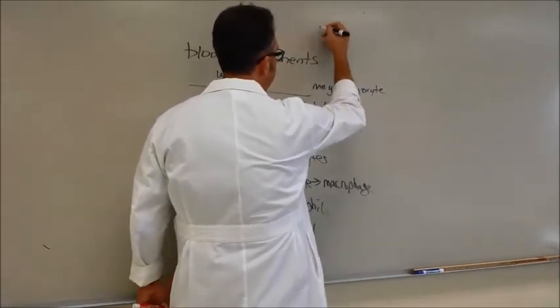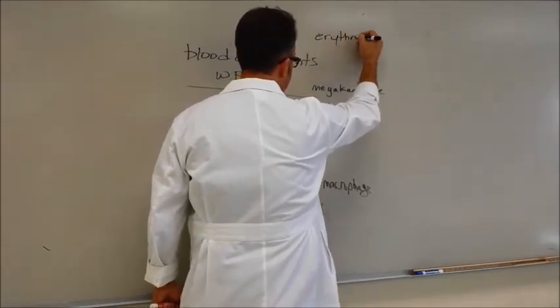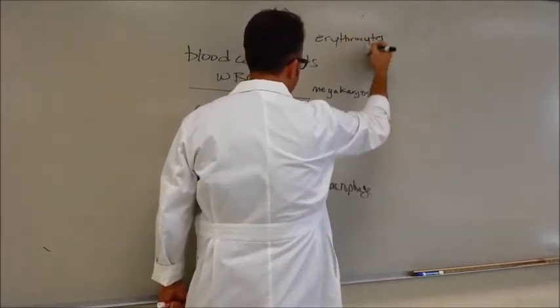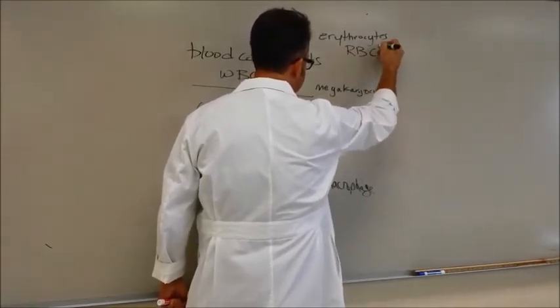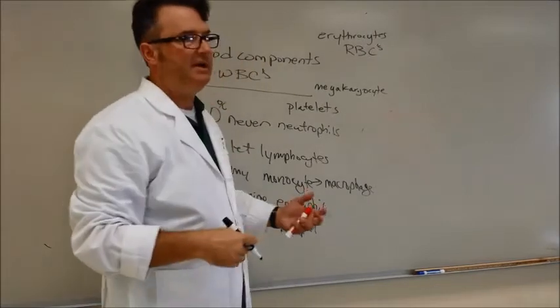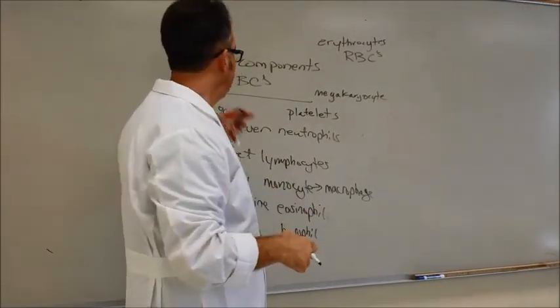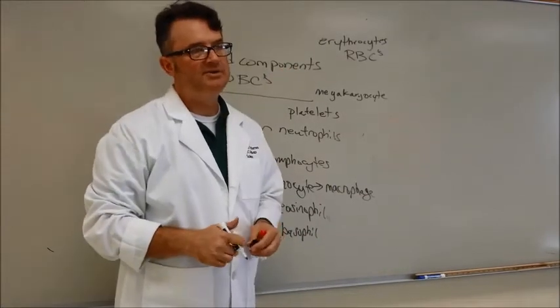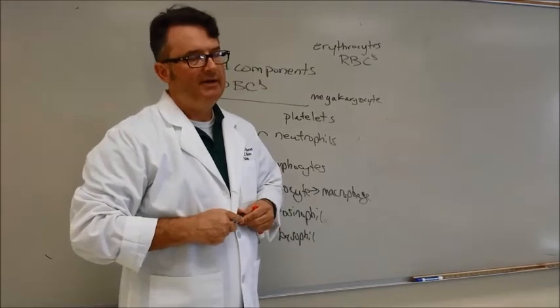And then, of course, erythrocytes are the red blood cells. They are the main components of your blood that carry oxygen and carbon dioxide back and forth. And then, in the blood, there is the plasma, which is where a lot of electrolytes and proteins, albumins, are carried.